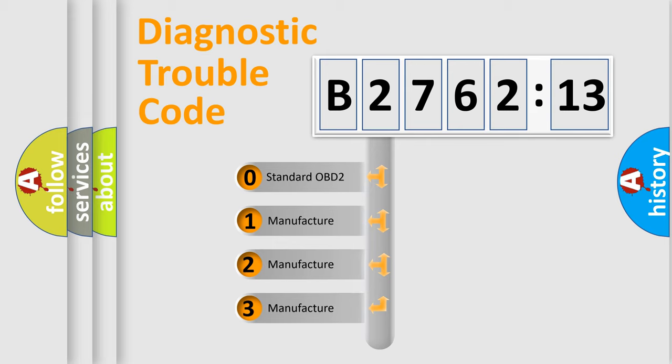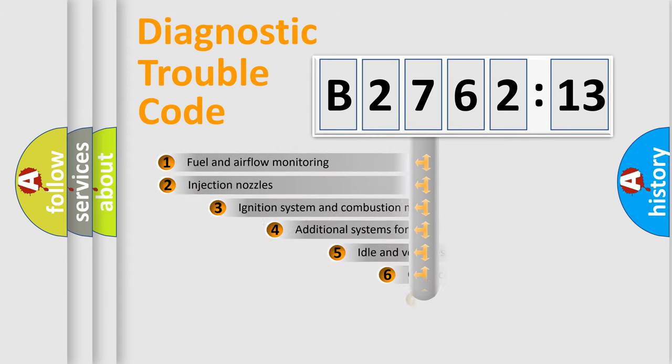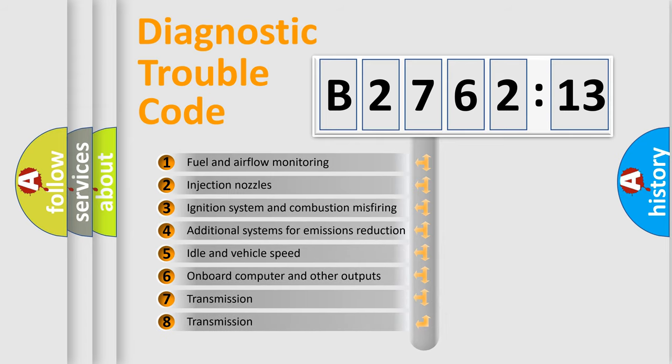This distribution is defined in the first character code. If the second character is expressed as zero, it is a standardized error. In the case of numbers 1, 2, or 3, it is a manufacturer-specific expression of the car-specific error.